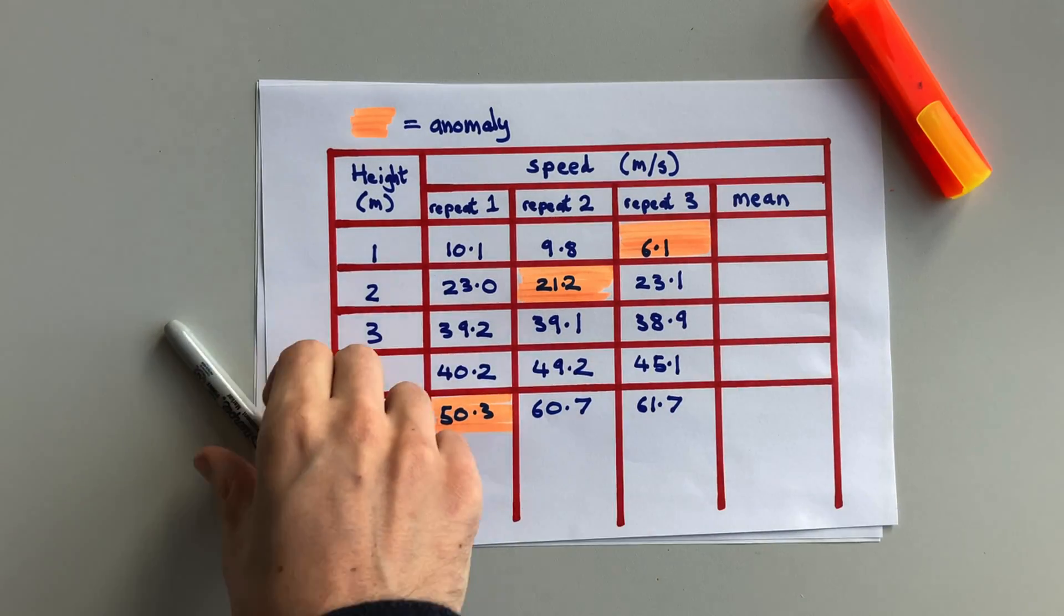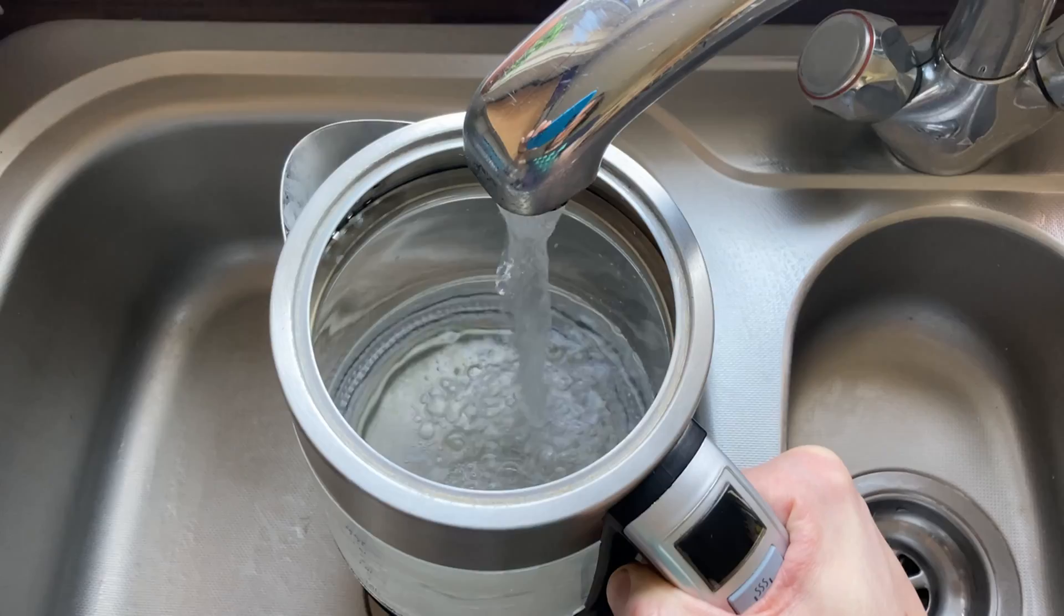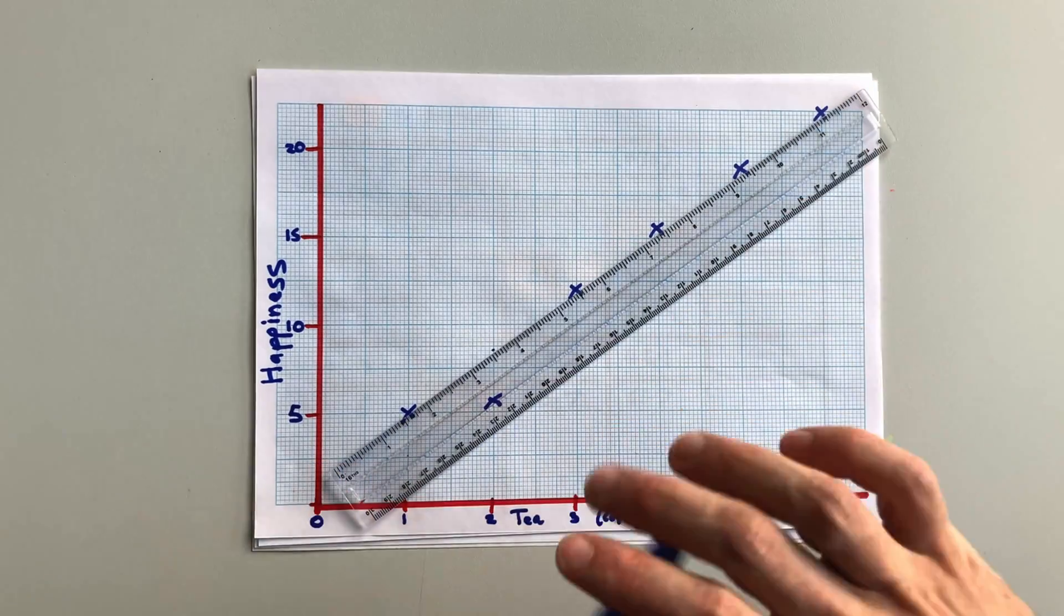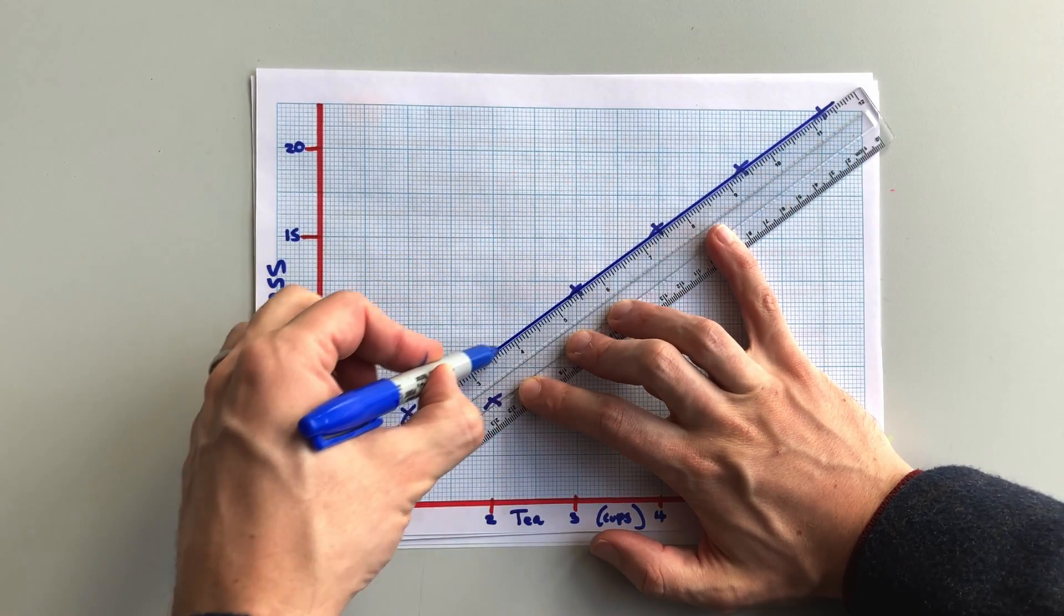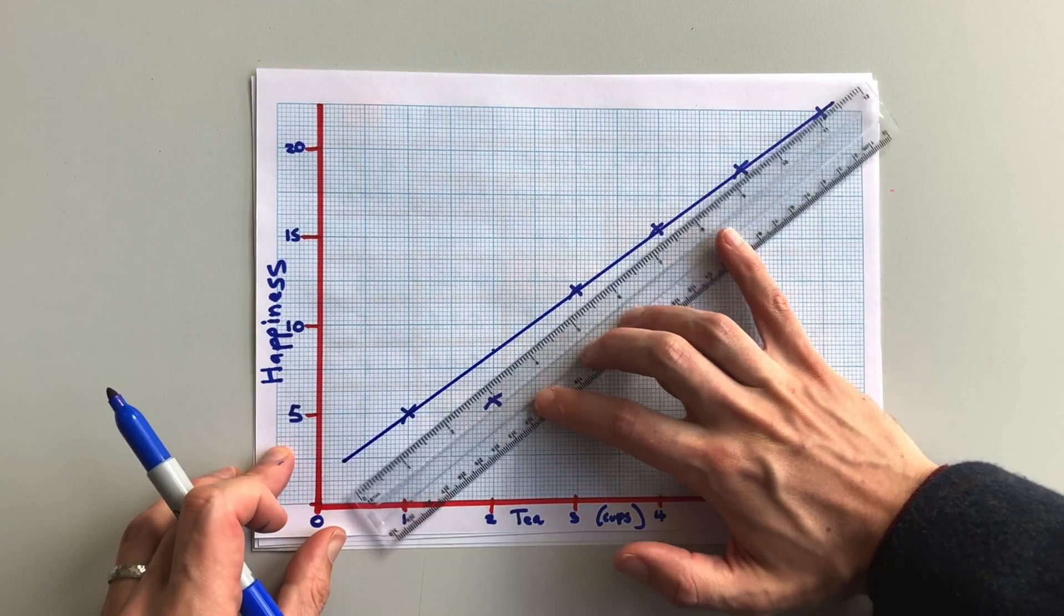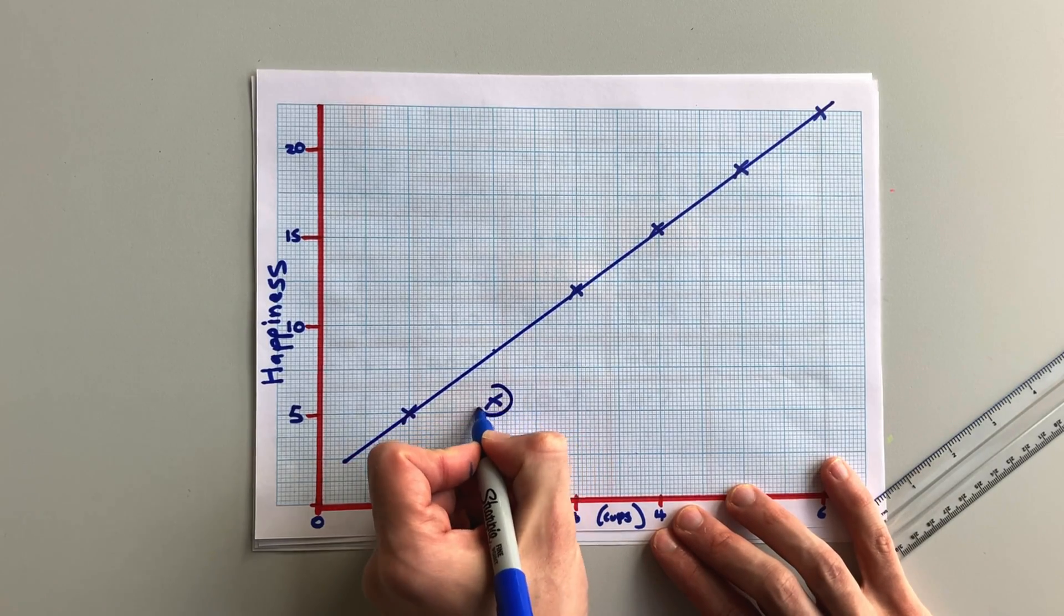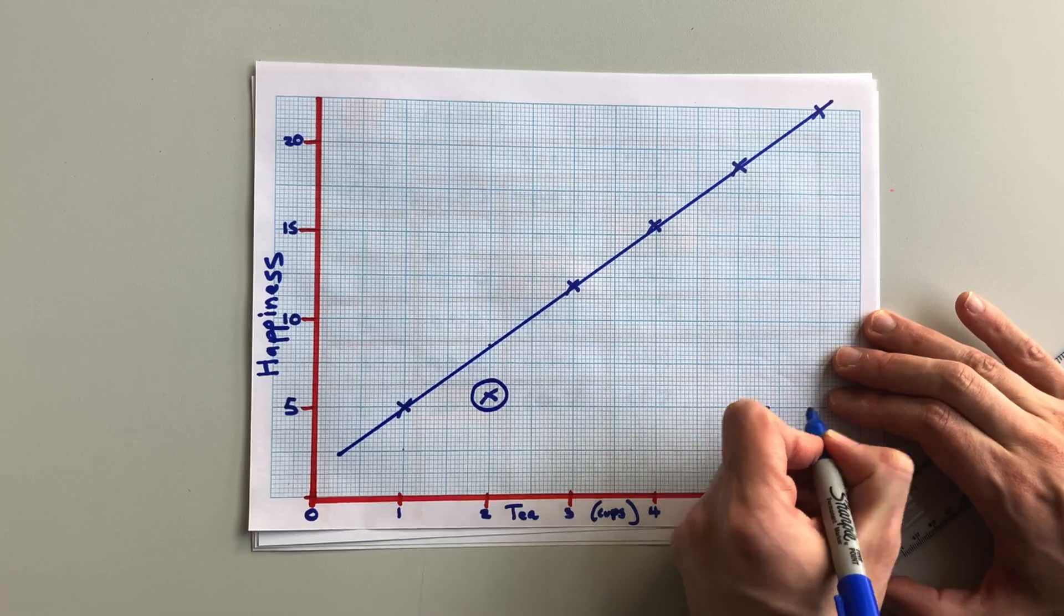So now let's do it for graphs. We'll start with an experiment to see how T affects happiness. This time, we're comparing the points we plotted to the line of best fit. For this first graph, most of the points are very close to the line, but one of them is different. It's much further away. It's an anomaly. On a graph, we circle the anomalies and add a key.